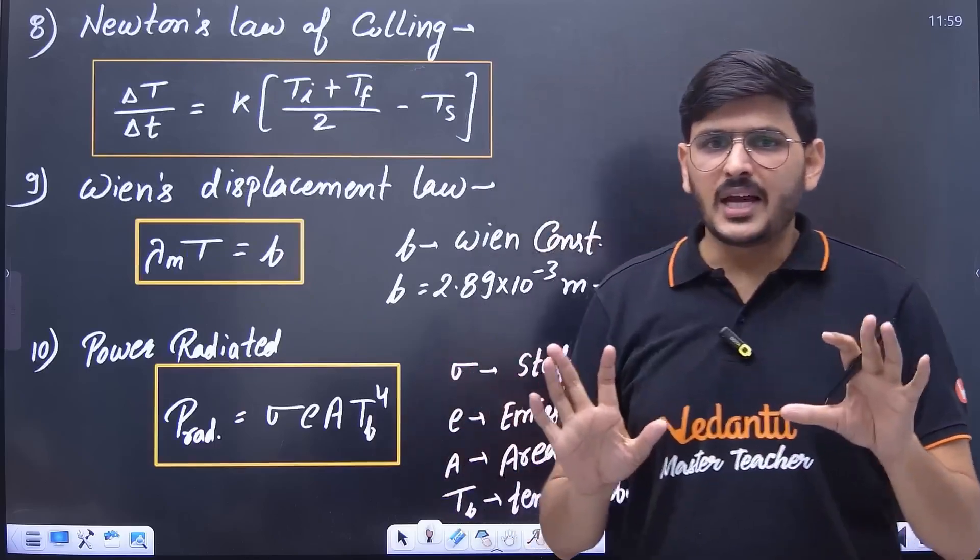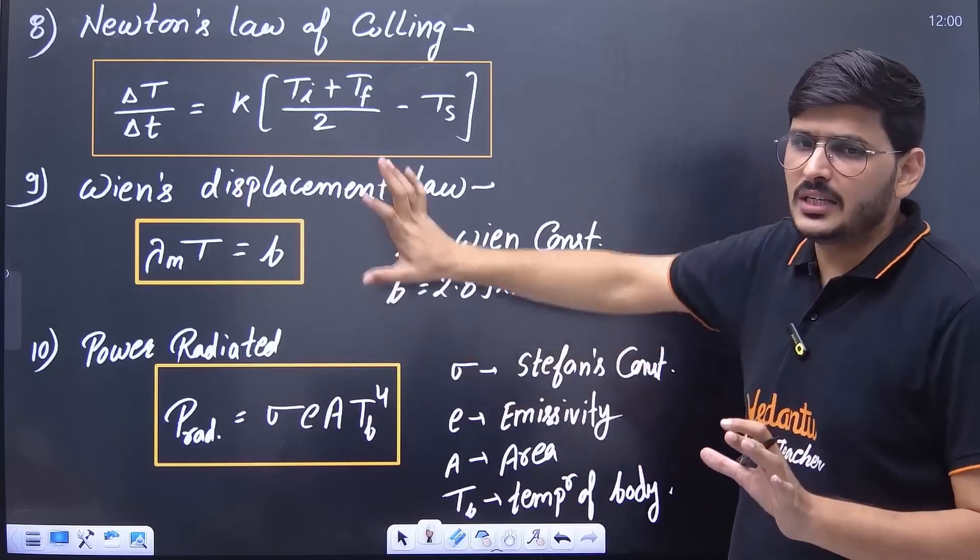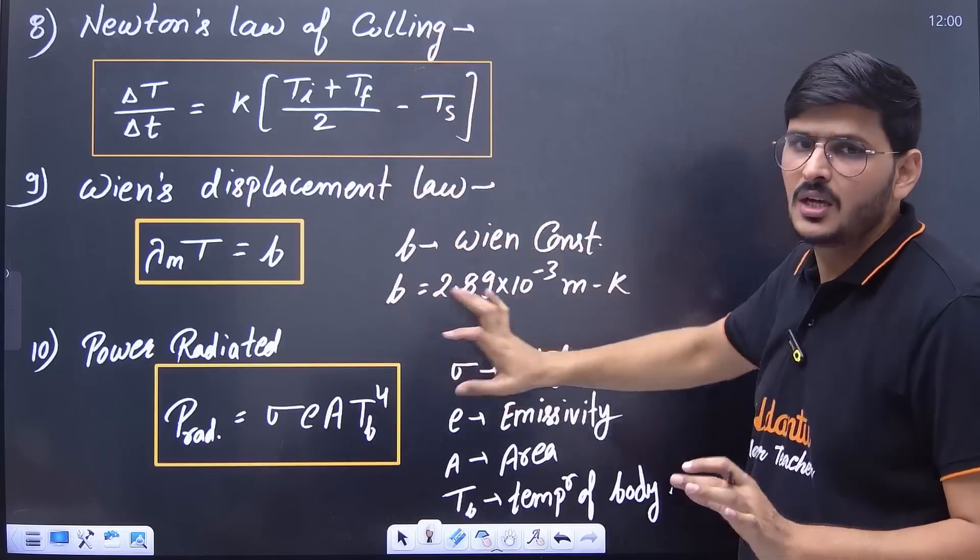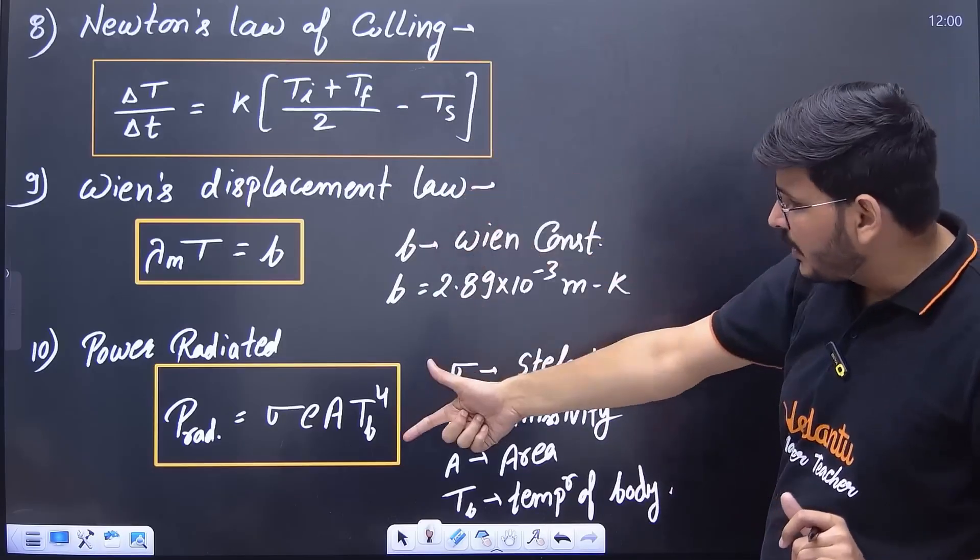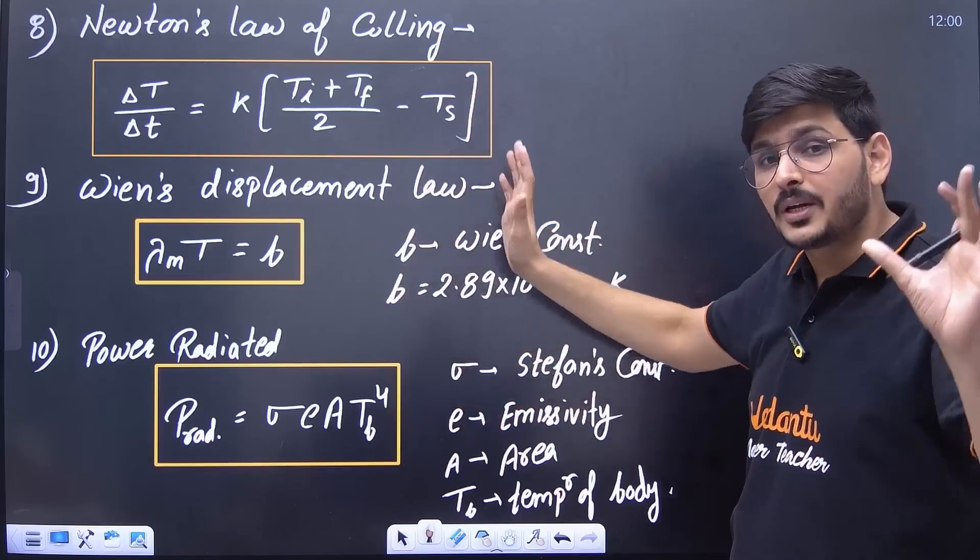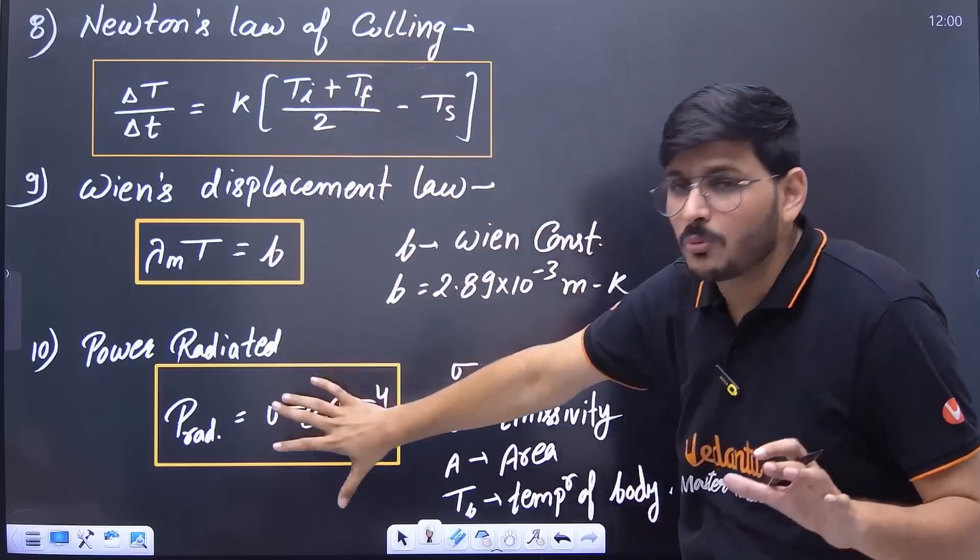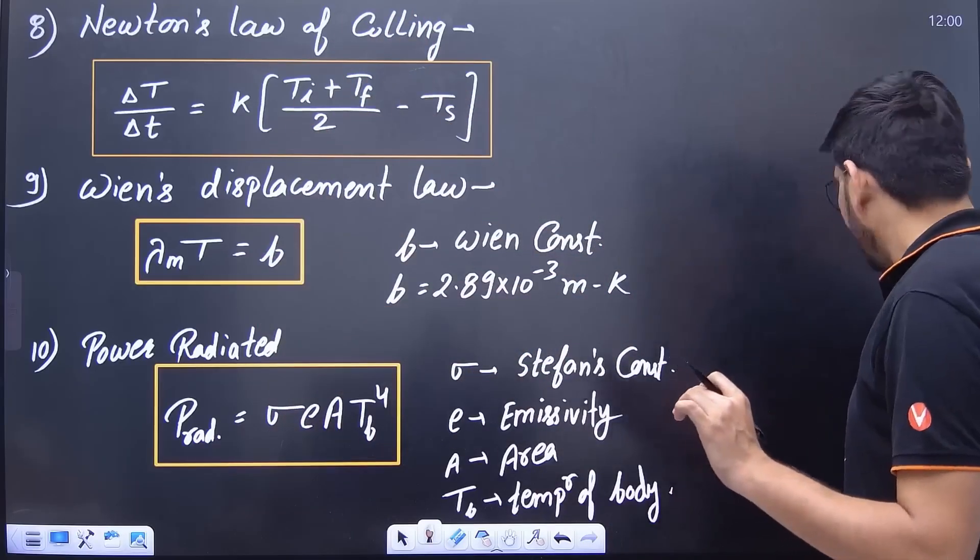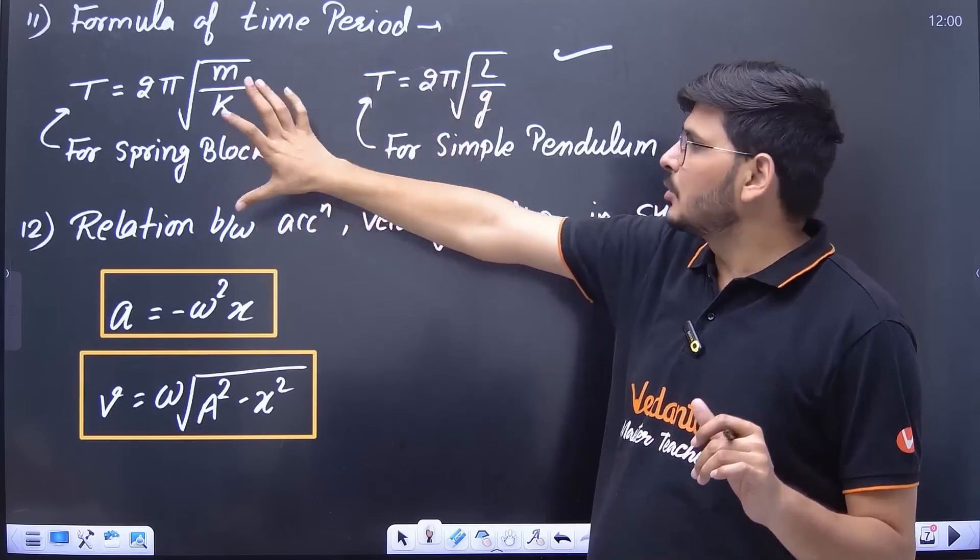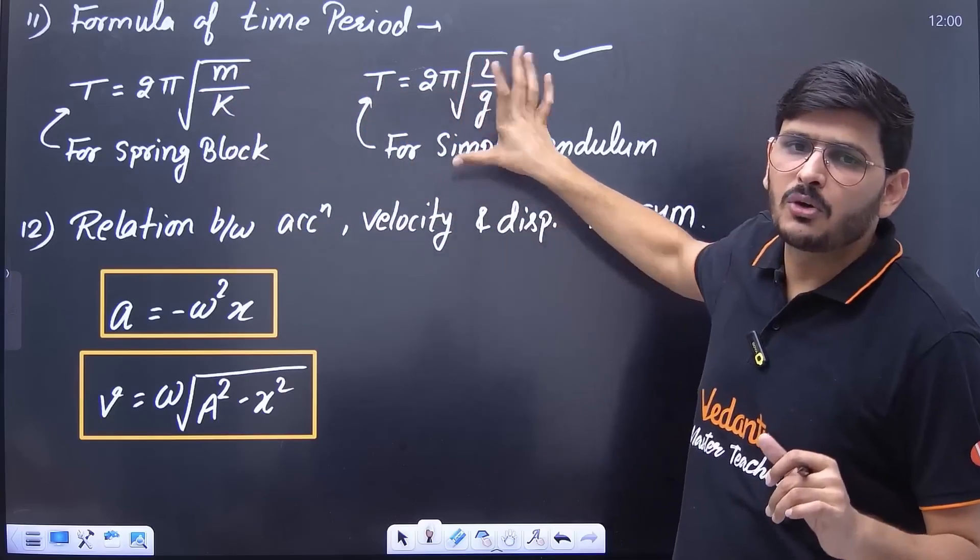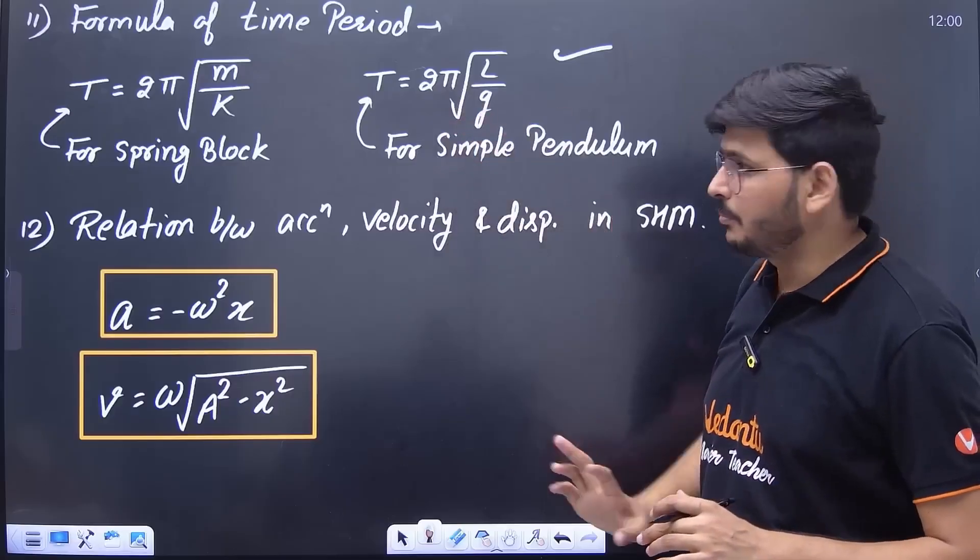Now look, I will not explain here because you must have read all these formulas somewhere. I am just explaining to you that all these formulas are very important. Newton's law of cooling, Wien's displacement and this power radiated, that means these three formulas, that whole chapter of mechanical thermal properties of matter. Understand that these three formulas are going to be very important in the whole chapter. Similarly, look at the time period formulas. You will see that in SHM, questions of time period will come. Then mostly the questions are related to this formula or to the simple pendulum formula. The whole chapter is very big in itself, but these formulas are very important in themselves.